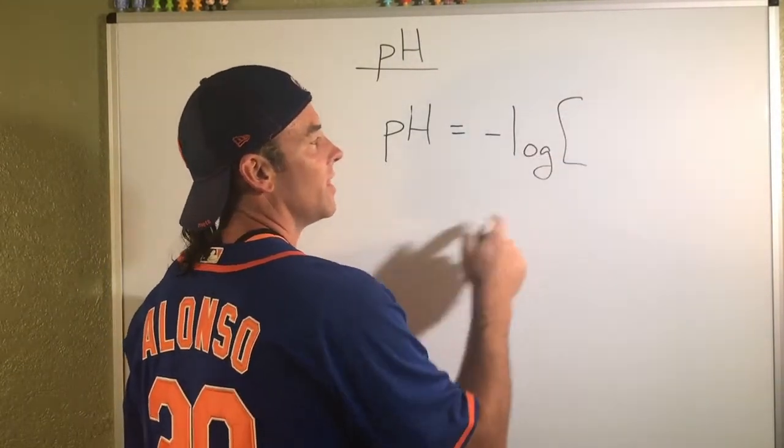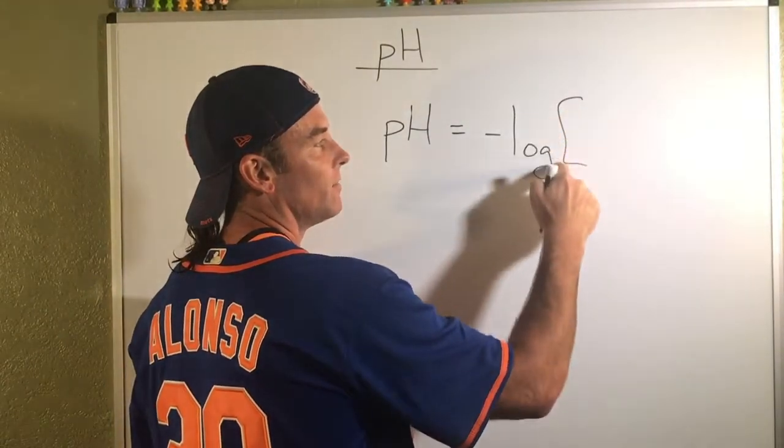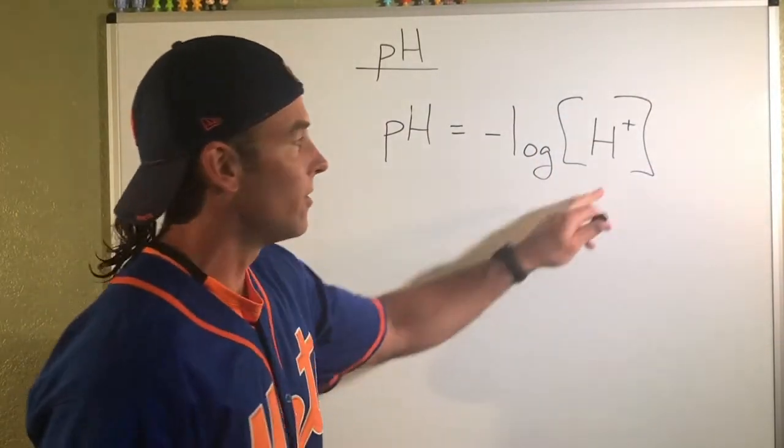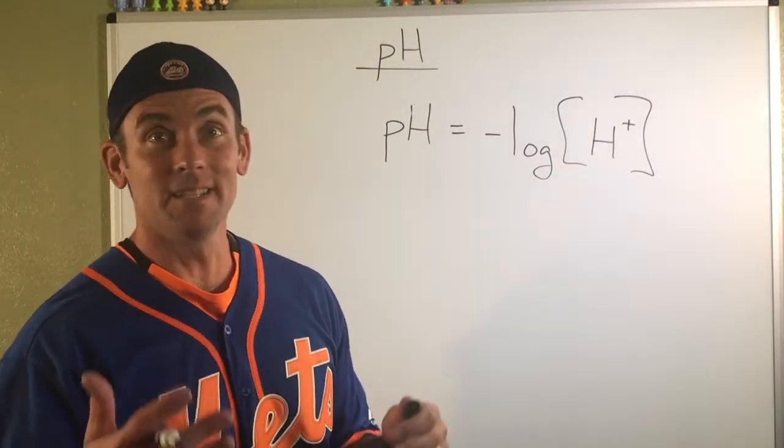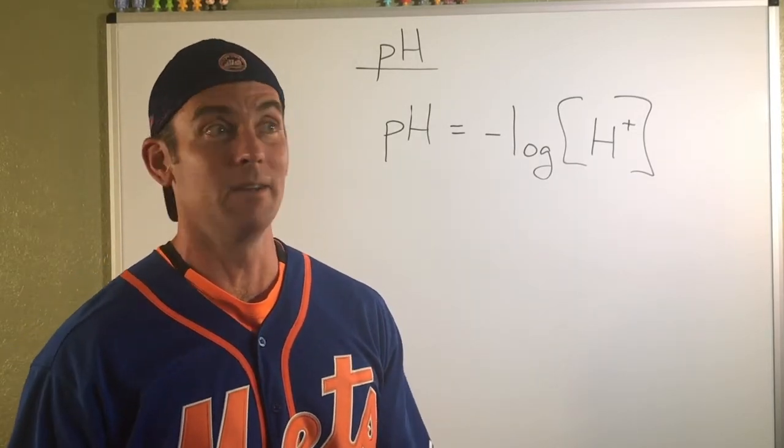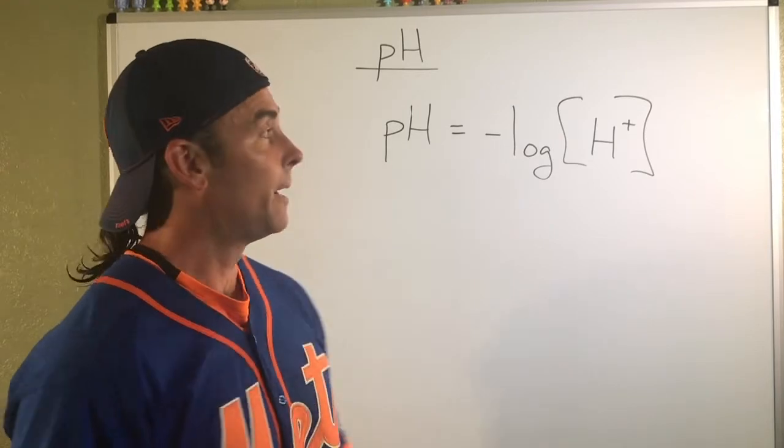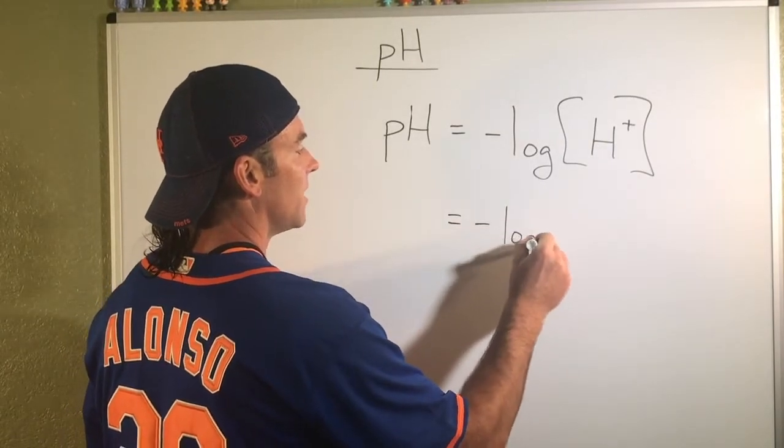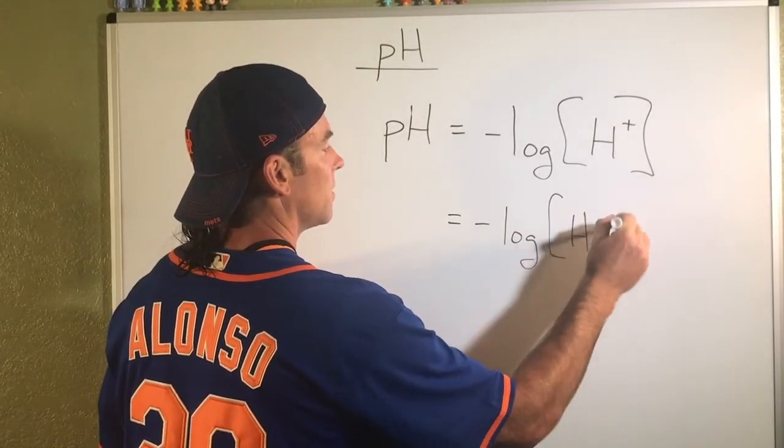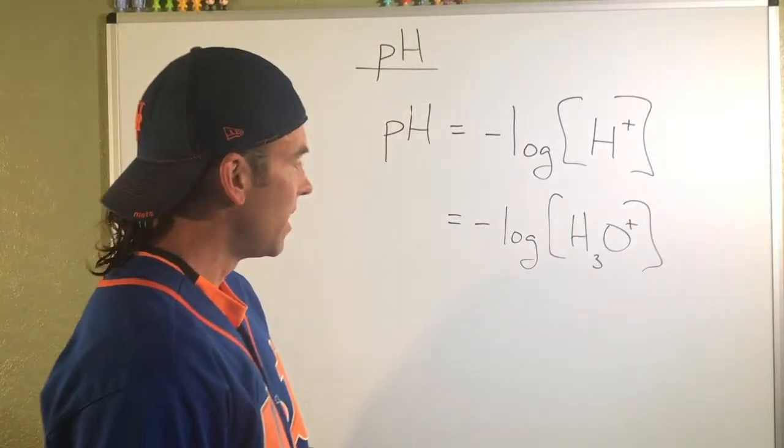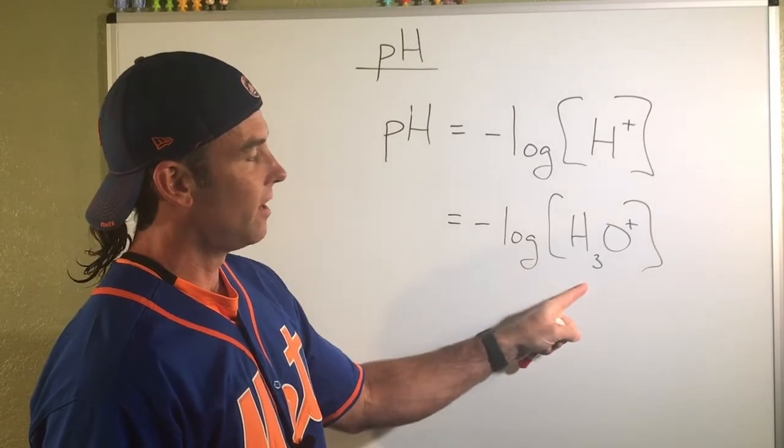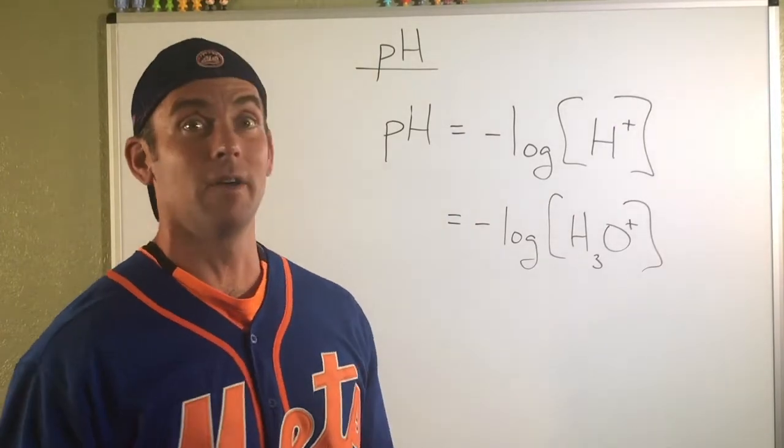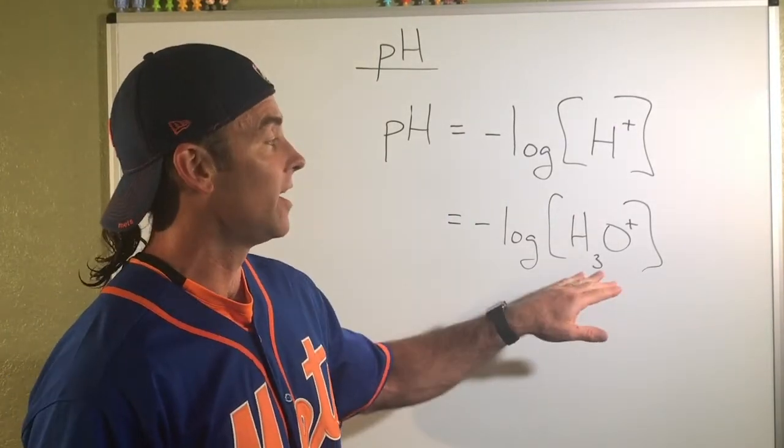So it turns out that minus the logarithm involves a concentration in molarity. And the concentration in molarity that we care about is H+, which kind of makes sense because we know that H+ is that acidic thing that gets transferred to water. And so there's actually another form for this pH concentration formula.